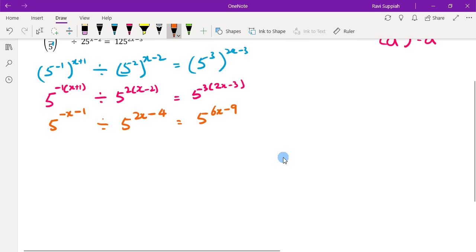So this is an important step. We need to make sure we multiply it correctly into all the terms in the bracket. Now the next step is, here we have a divide. So the indices rule that we can apply here is a to the power of m divided by a to the power of n is a to the power of m minus n.